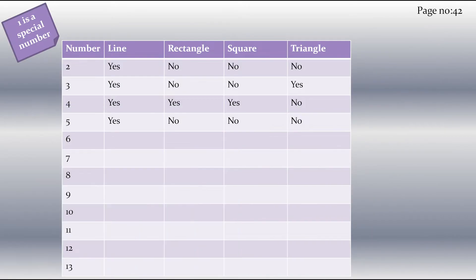On page number 42, you have a box to complete. Here we have to check if the given numbers can make a line, rectangle, square, or triangle. First, we will check for line. As I told you at the start of the video, every number can make a line, so let's write yes for each number.